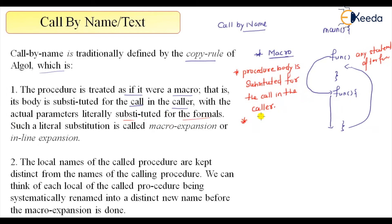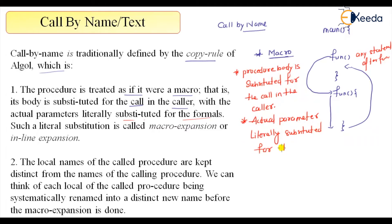The procedure body is substituted for the call in the caller, just like a macro expansion, and actual parameters are literally substituted for the formal parameters. For the formals, actual parameters are substituted — so formal variables are gone. Such literal substitution is called macro expansion or inline expansion. So it's not jumping and then coming back — it's just expanding.